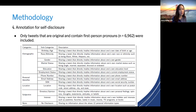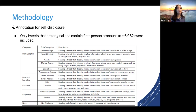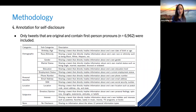If one post contained more than one type of information, we considered that as a multi-label. We checked all of the relevant categories, and those tweets that did not contain any of the categories were labeled as posts with no self-disclosing information.